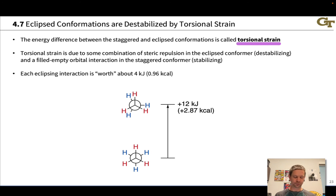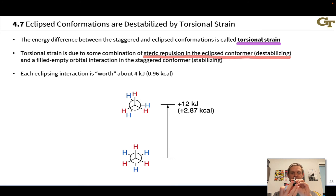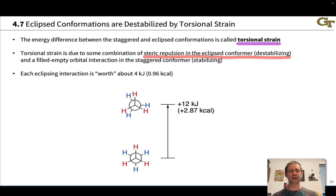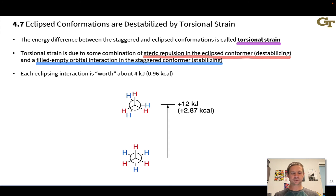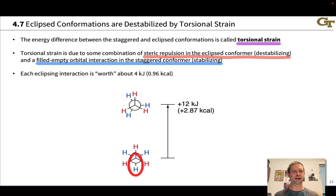The destabilization of the eclipsed conformer of ethane is a classic example of torsional strain — it's the origin of the energy difference between the staggered and eclipsed conformations. In ethane, torsional strain is due to some combination of steric repulsion in the eclipsed conformer — when the bonds are perfectly aligned, the C-H groups are relatively close to each other. There's also a stabilizing effect in the staggered conformer involving sigma bonding to sigma-star antibonding interactions between C-H bonds that are anti to one another, which introduces some stabilizing electron delocalization.